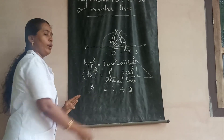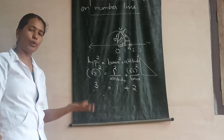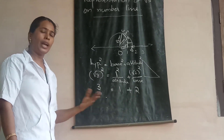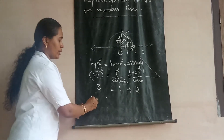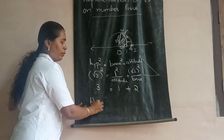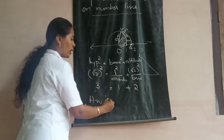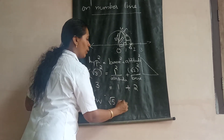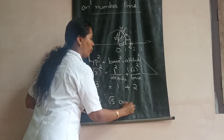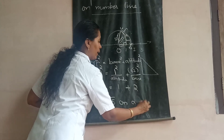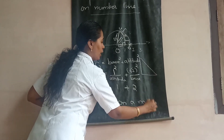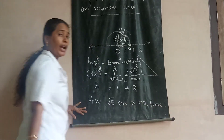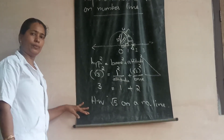Go through the video once or twice — then only you will get the idea. Your homework is to try yourself to represent root 5 on a number line. If you are not getting it, I will explain through another video. Thank you.